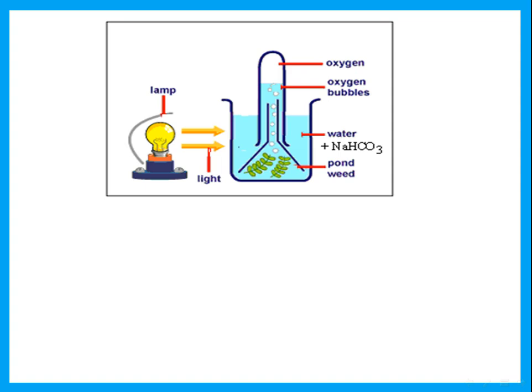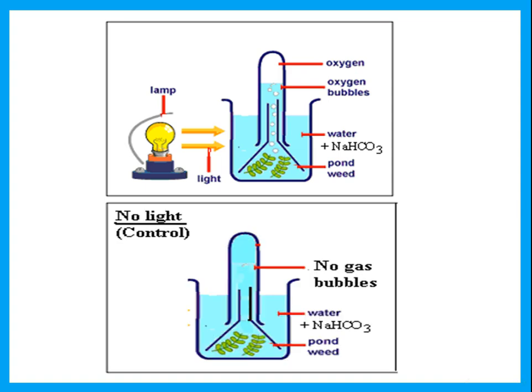In some of these experiments you will be required to suggest a control. A control means repeating the experiment but without the factor you're testing. Here we're testing for light, so we repeat everything but place it in the dark. If you place this plant in the dark, it's not going to do photosynthesis, so there are no bubbles of gas given off. That proves that the bubbles we had at the beginning were due to photosynthesis, not to anything else in the apparatus.